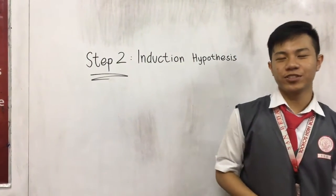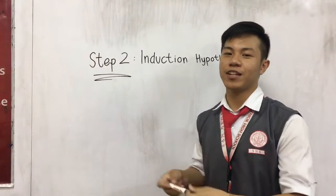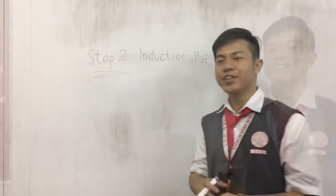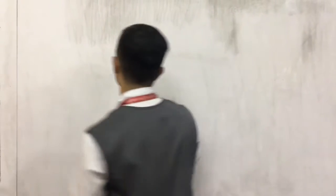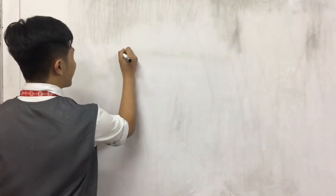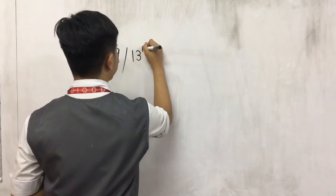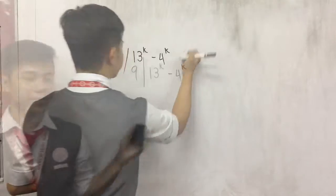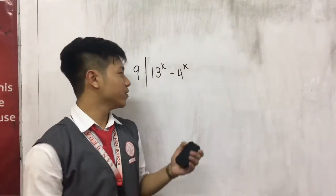Hi guys, I'm Dave Zunzai and I'm going to discuss the second step in mathematical induction, which is the induction hypothesis. In the induction hypothesis, we will assume that for every n equal to k, 9 divides 13 raised to k minus 4 raised to k.